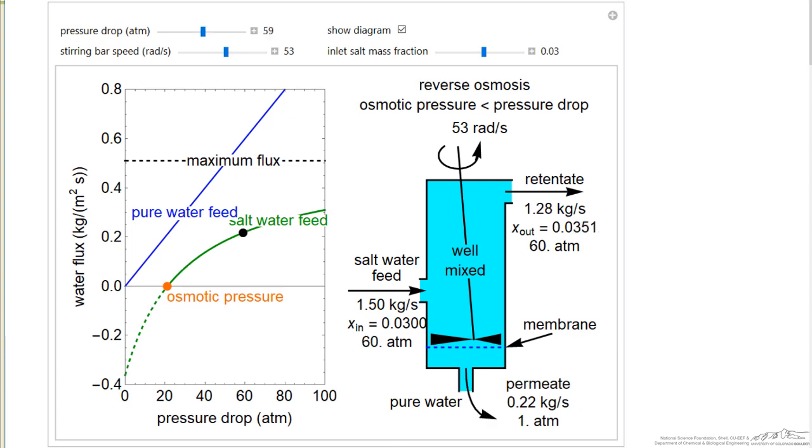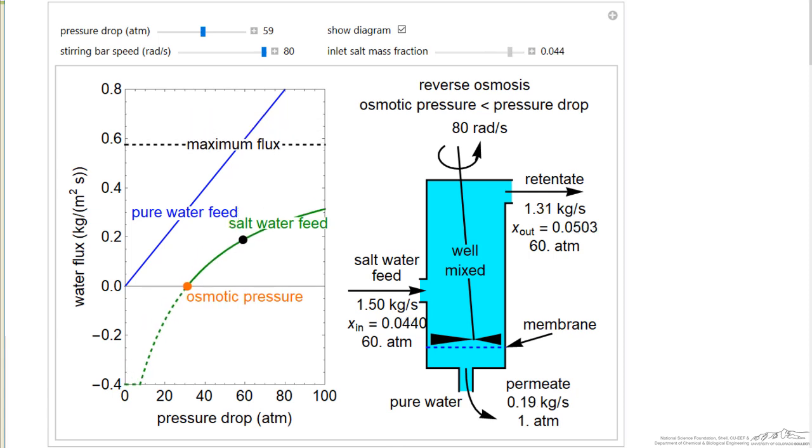Now let's go back to reverse osmosis. If I increase the stirring bar speed, I'm decreasing the concentration polarization, and I increase the flux for the same pressure drop. If I increase the salt concentration, I'm changing the osmotic pressure and lowering the flux through the membrane for a given pressure drop because I'm lowering the chemical potential of water on the feed side.